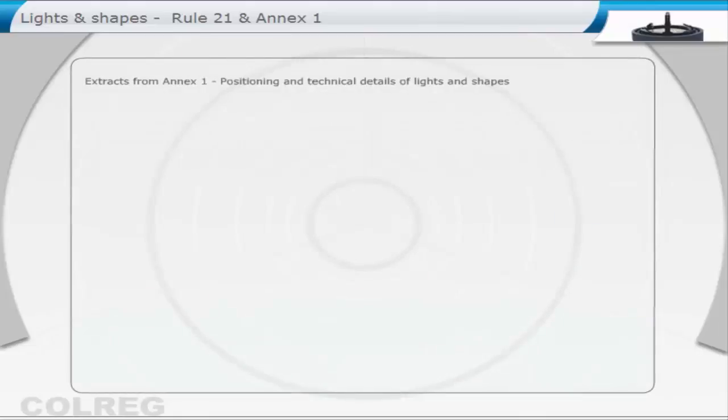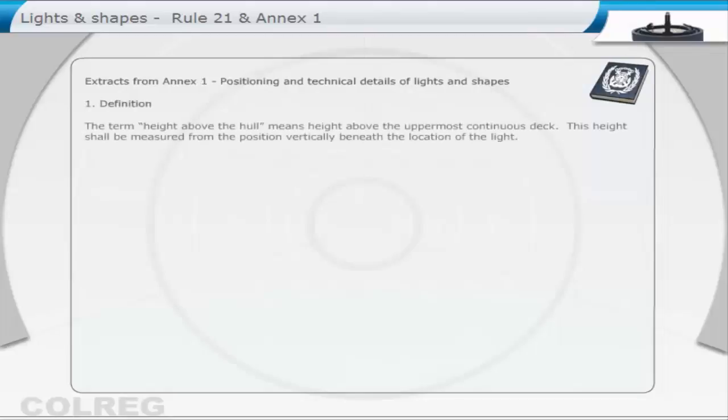Extracts from Annex 1: Positioning and technical details of lights and shapes. Definition: The term height above the hull means height above the uppermost continuous deck. This height shall be measured from the position vertically beneath the location of the light.